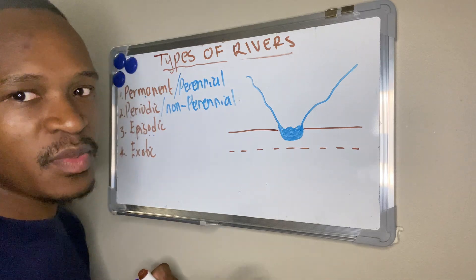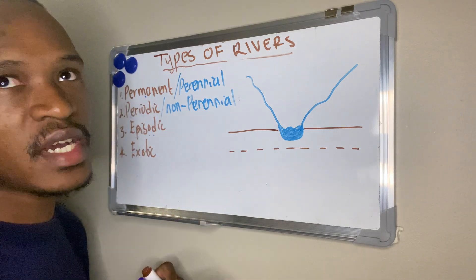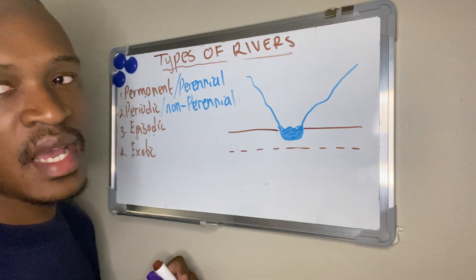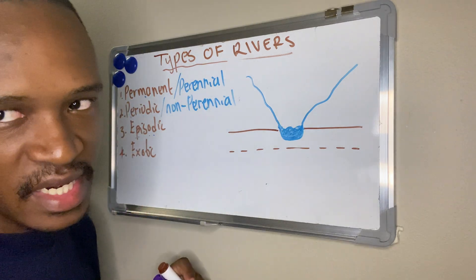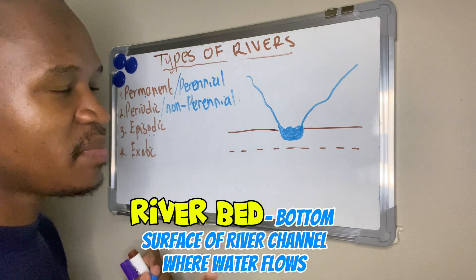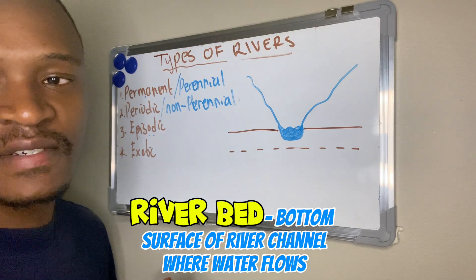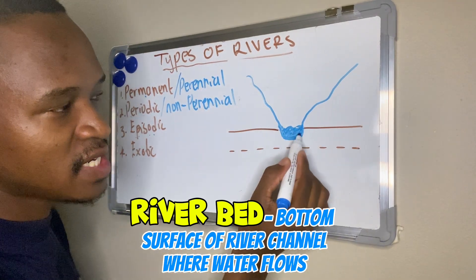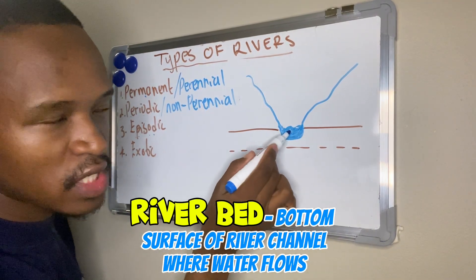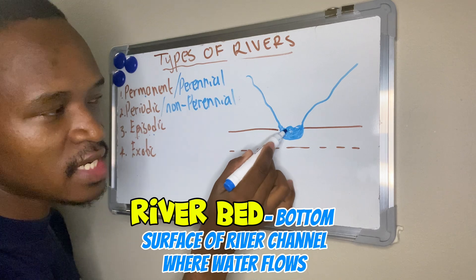For this topic, we need to know two things. First, I want you guys to know what a riverbed is. A riverbed is the bottom surface of a river — the river channel where the water flows.